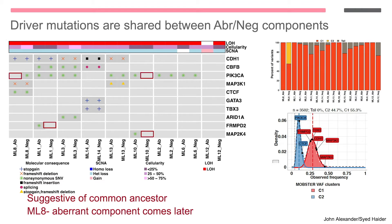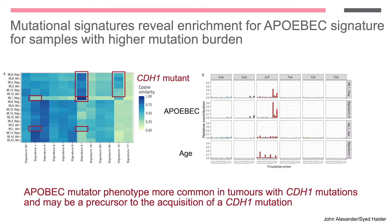We then went on to look at subclone analysis on the different dissected components. In general, each of the different components of these tumours is clonal — mainly one clone. However, in the negative components of ML8, we see two subclones: a main clone with the e-cadherin mutation and a minor subclone with the PI3 kinase mutation. Altogether, this data suggests that these tumours arise from a common ancestor, and the aberrant component in this patient seems to have come later, given the subclonal frequency of the PI3 kinase mutation.